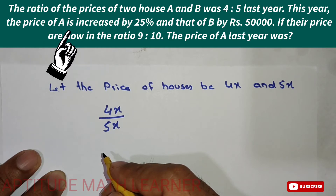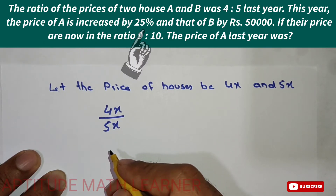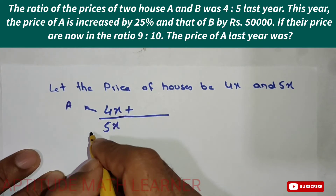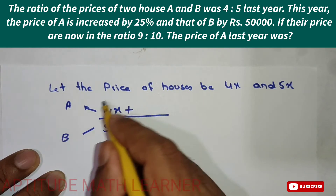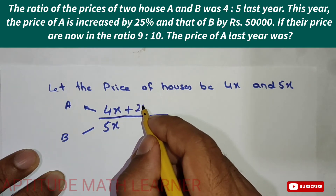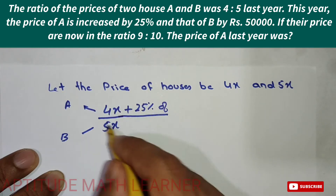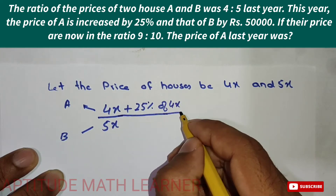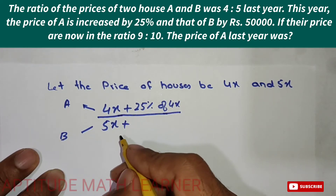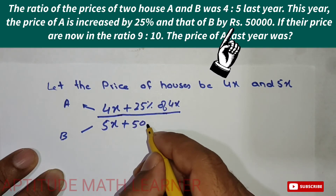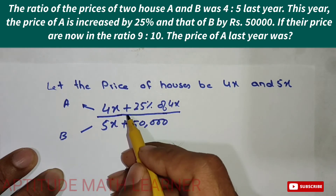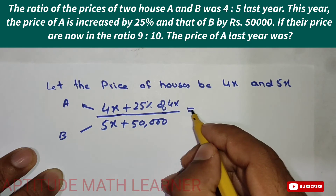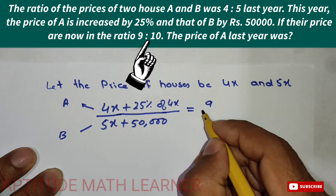This year, the price of A is increased by 25 percent. So the new price of house A is 4X plus 25 percent of 4X. For house B, the price this year is increased by rupees 50,000, so it becomes 5X plus 50,000.